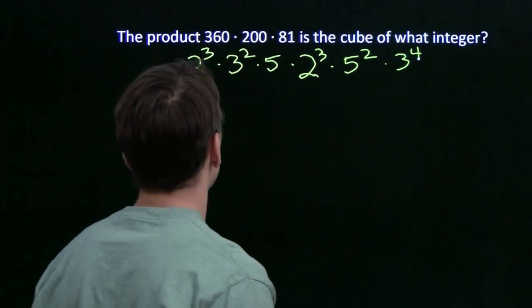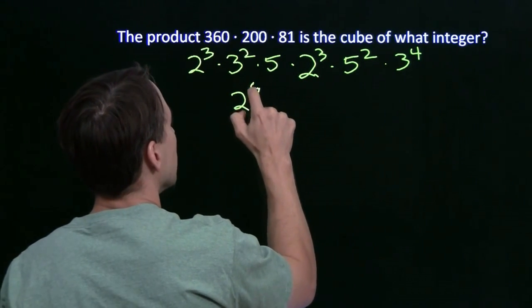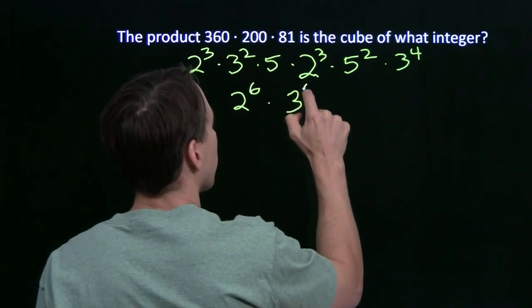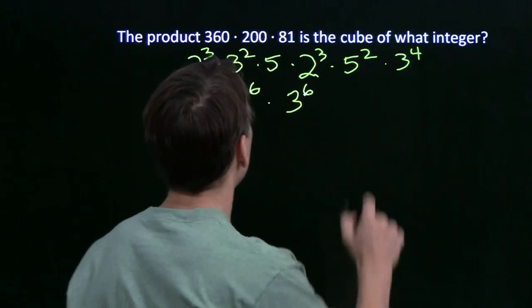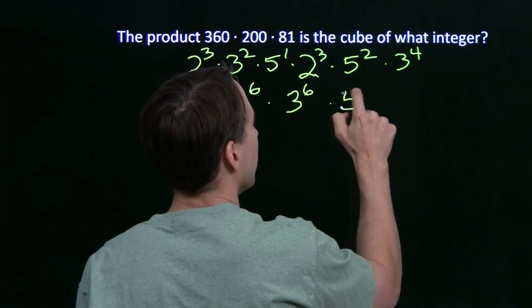All right, let's see. So now I can combine a bunch of these. I can combine 2 cubed and 2 cubed, that gives me 2 to the sixth. 3 squared and 3 to the fourth, that gives me 3 to the sixth. 5 and 5 squared, that 5 of course is 5 to the first, so we have 5 cubed.